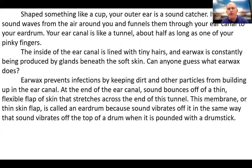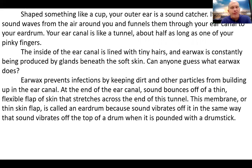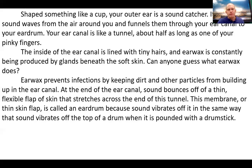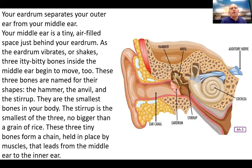At the end of the ear canal, sound bounces off a thin, flexible flap of skin that stretches across the end of the tunnel. This membrane or thin skin flap is called an eardrum, because sound vibrates off it in the same way that sound vibrates off the top of a drum when it's pounded with a drumstick. Your eardrum separates your outer ear from your middle ear. Your middle ear is a tiny air-filled space just behind your eardrum.